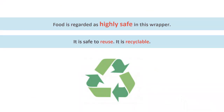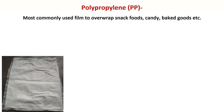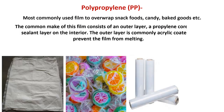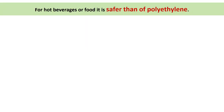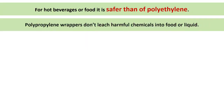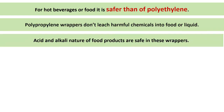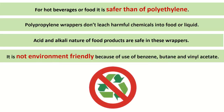Polypropylene (PP) is the most commonly used film to overwrap snack foods, candy, baked goods, etc. The common construction of this film consists of an outer layer, a polypropylene core, and a sealant layer on the interior. The outer layer is commonly acrylic-coated to prevent the film from melting. Recycling number 5 is given to this plastic. For hot beverages or food, it is safer than polyethylene. Polypropylene wrappers don't leach harmful chemicals into food or liquid, and foods of acid and alkaline nature are safe in these wrappers. However, it is not environmentally friendly because of the use of benzene, butane, and vinyl acetate.